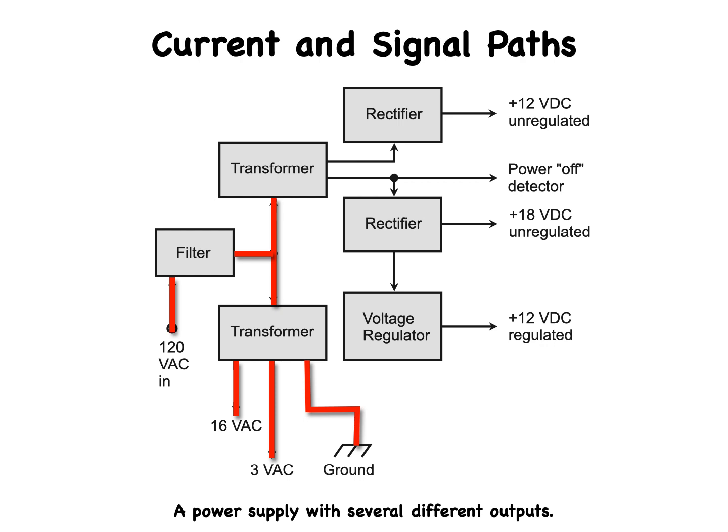From the filter, the input voltage gets fed to another transformer that derives the voltages to be converted to DC. One output of the transformer goes to a rectifier that provides 12 volts DC without any voltage regulation. The other transformer output goes to a separate rectifier that provides 18 volts DC, also unregulated.